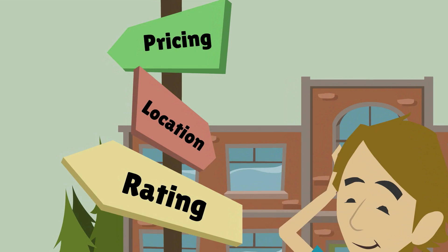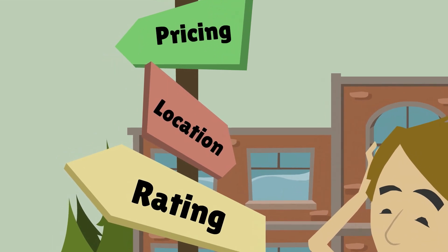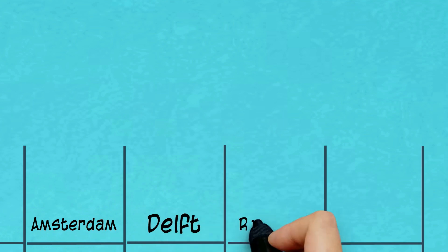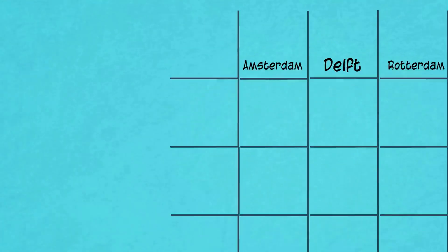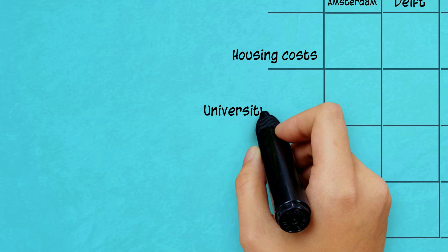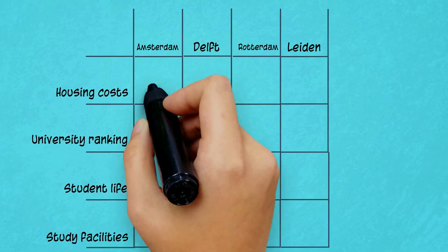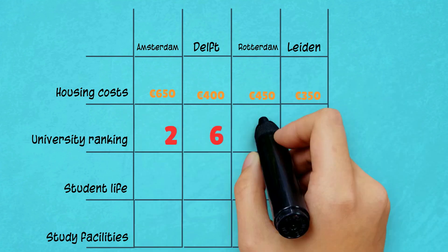The MCA process consists of several steps. The first step is formalising and grouping the different criteria. So, let's say you are thinking about studying in Amsterdam, Delft, Rotterdam or Leiden. You want to take into account the housing costs, the university ranking, the overall student life and the study facilities. After you know what your criteria are, you need to determine the scores per alternative.